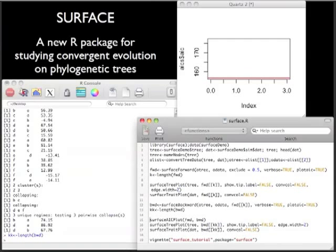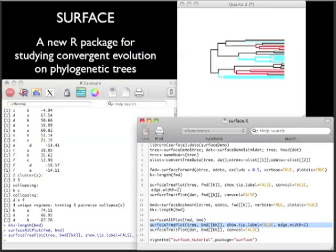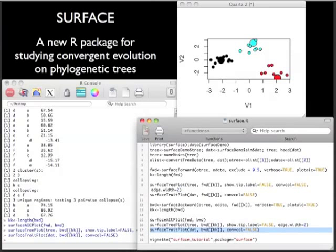Now that the analysis is done, we can visualize how the AIC changed over the course of the forward and then the backward phases of SURFACE. And we can look at where the collapsed regimes occur, both on the branches of the tree, as well as in trait space.